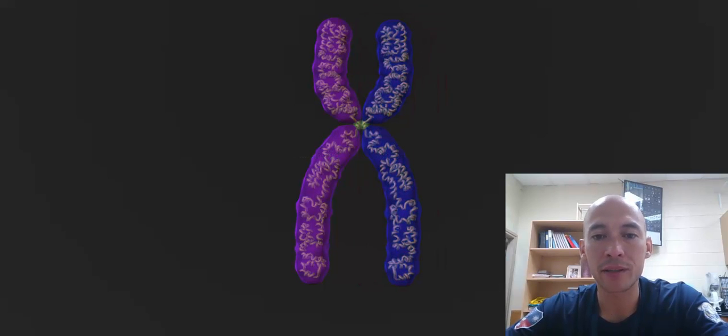Eventually, when the cell splits, these chromatids separate and go to separate cells. But while they are together, they are connected at the center that we call the centromere.